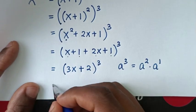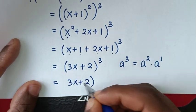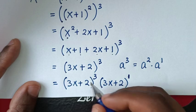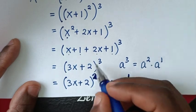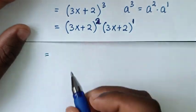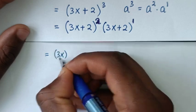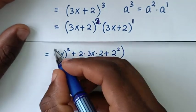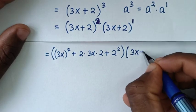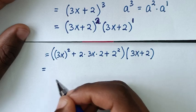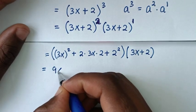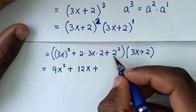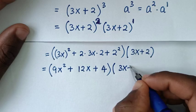So (3x plus 2) cubed equals (3x plus 2) squared times (3x plus 2). Expanding (3x plus 2) squared using (a plus b) squared gives 9x squared plus 12x plus 4, then multiplied by (3x plus 2). So it will be equal to (9x squared plus 12x plus 4) times (3x plus 2).